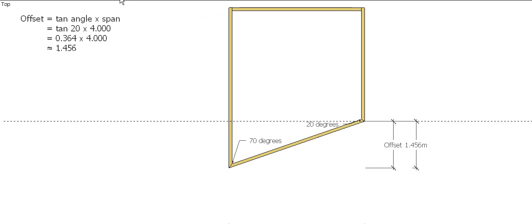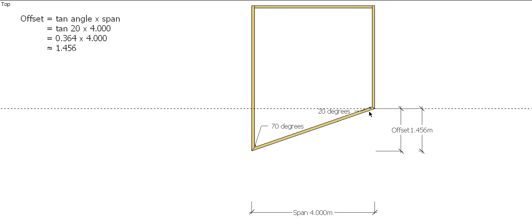The other thing we need to know is the span of the building or the distance from here to here, and we can use tan. Tan times the angle, which is in this case 20 degrees, times the span will give us our offset distance. So tan times 20 gives us 0.364 times our span which is 4 meters, gives us a distance of 1.456 from this corner straight out to this corner. That's our offset.